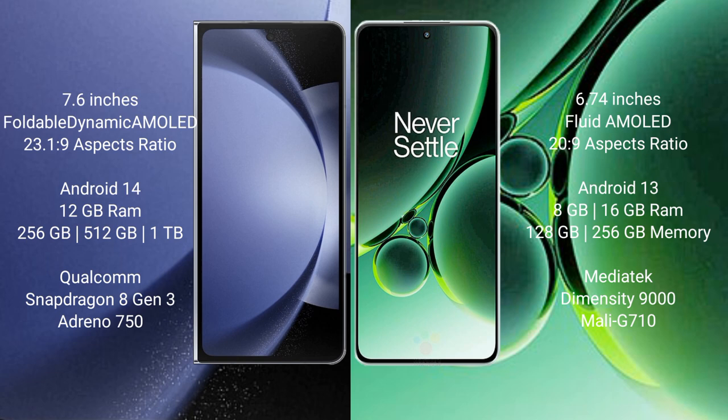Samsung Galaxy Z Fold 6 comes with 12GB RAM and 256GB internal storage, powered by the Qualcomm Snapdragon 8 Gen 3 processor with an Adreno GPU. OnePlus Nord 3 comes with 8GB or 16GB RAM and 128GB or 256GB internal storage, powered by the MediaTek Dimensity 9000 processor with a Mali-G710 GPU.